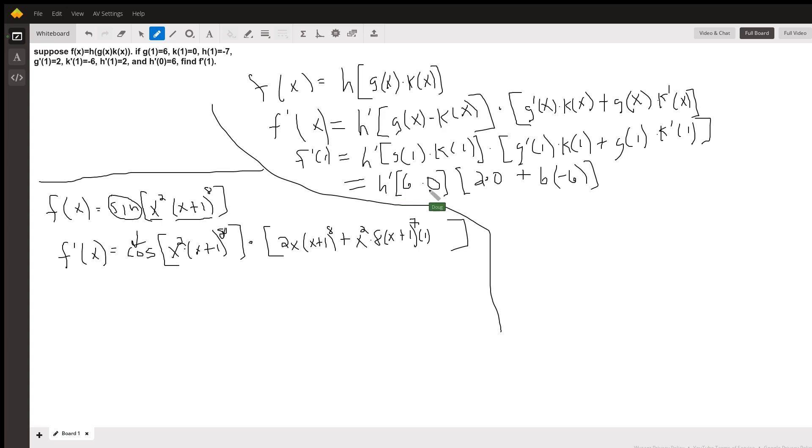6 times 0 here is 0. h prime of 0 is 6. 6 times negative 6 is negative 36. This is a plus. 6 times negative 36 should be our answer.